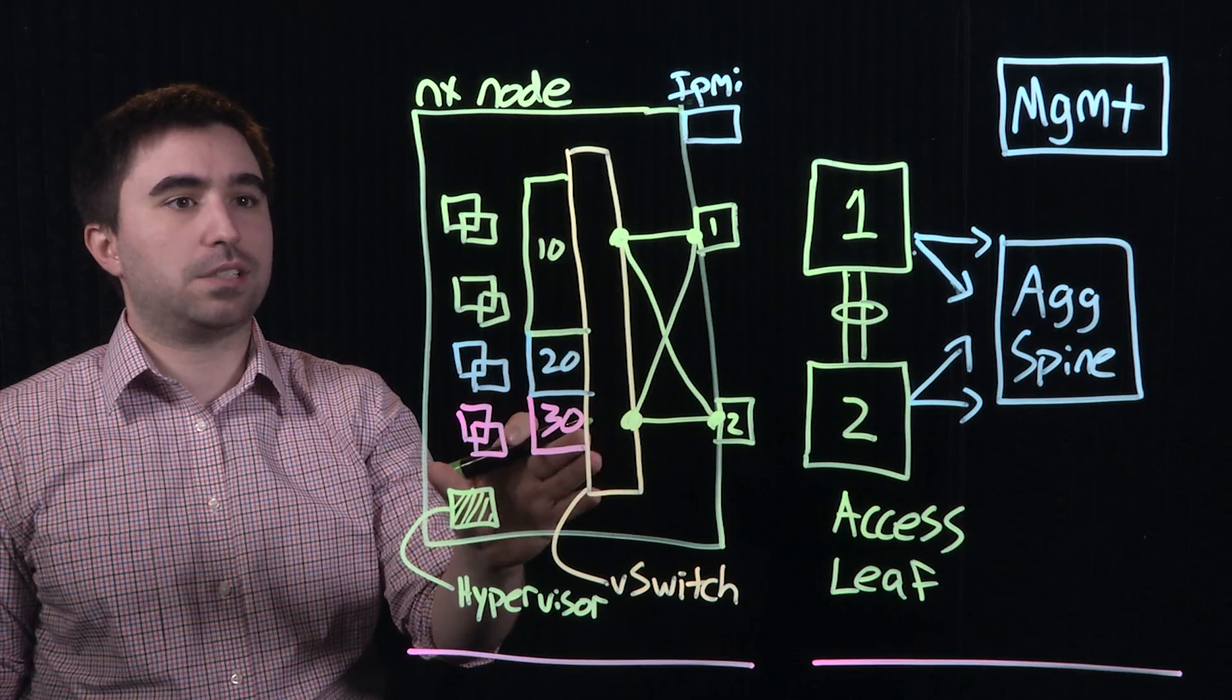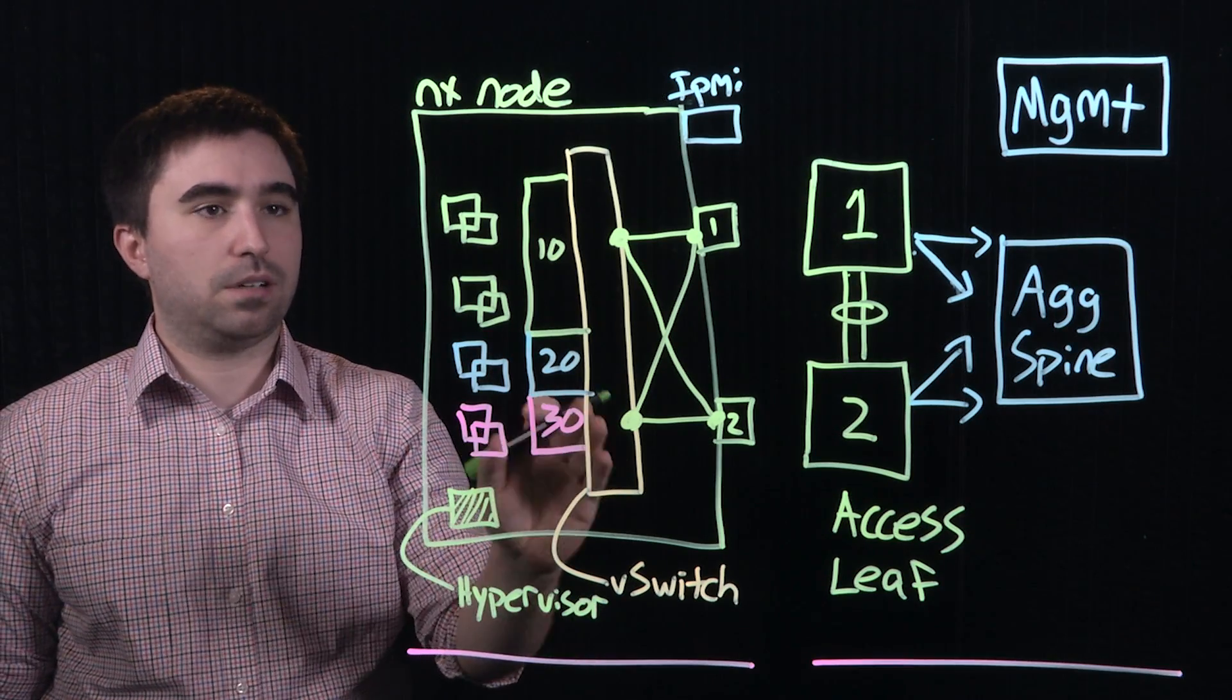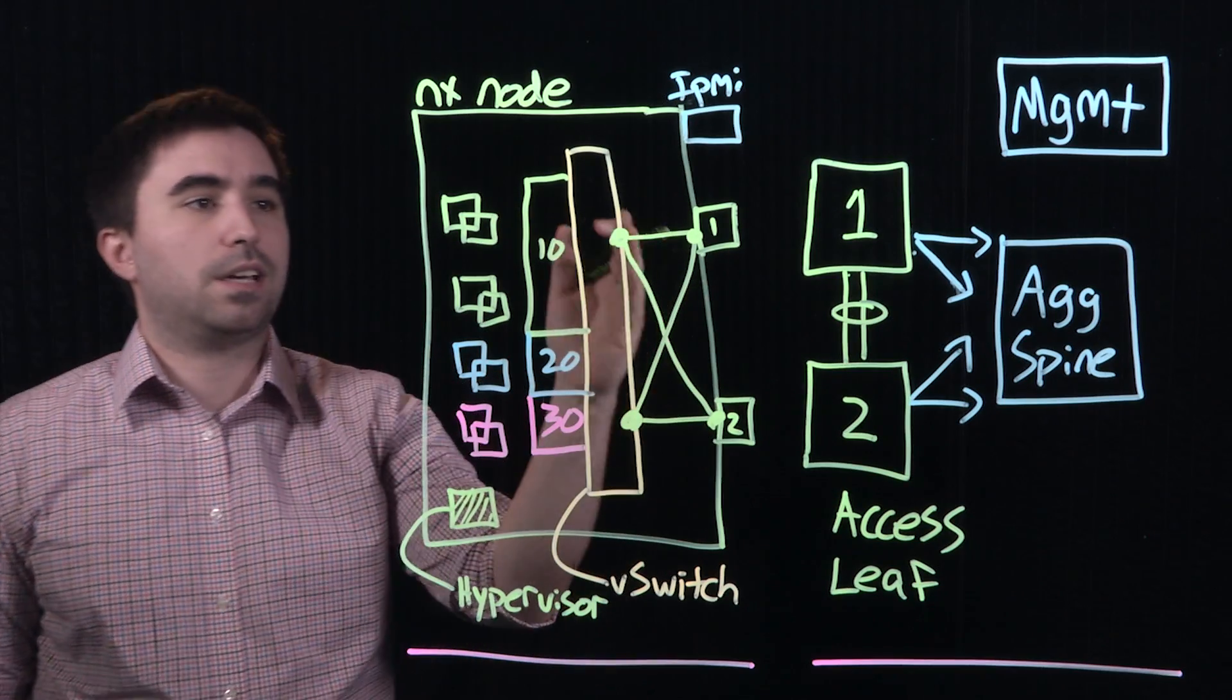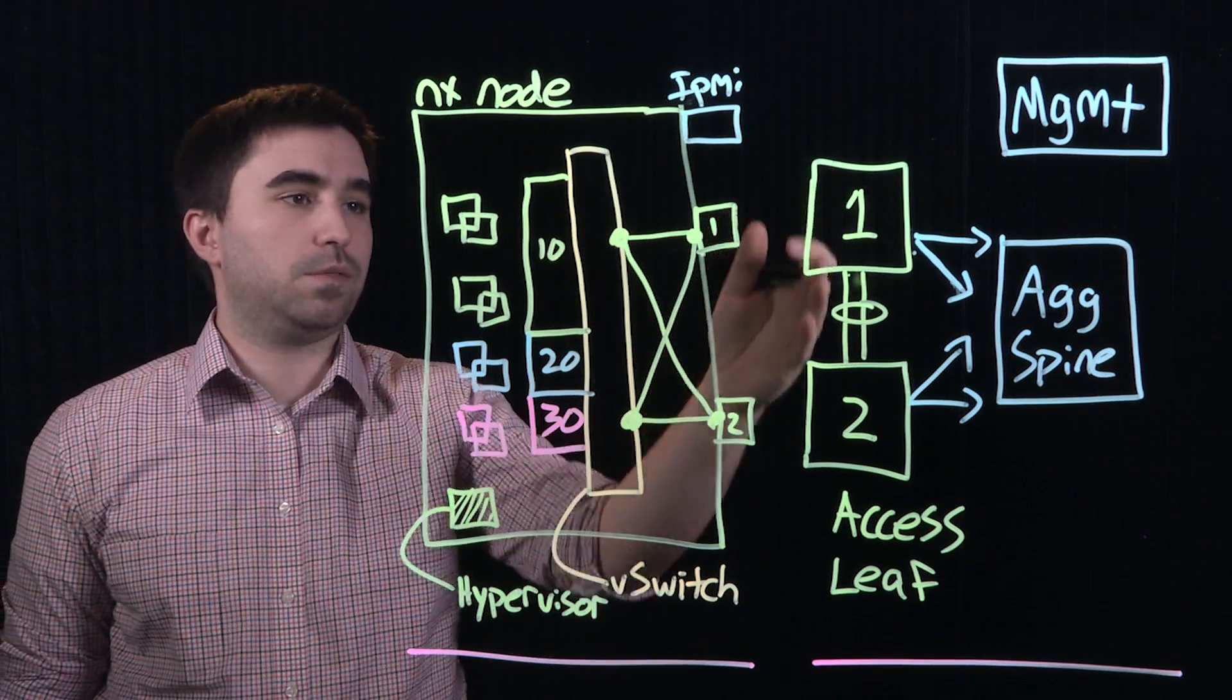We've got a diagram here of a Nutanix host running a hypervisor, a vSwitch, several virtual machines, and several virtual networks. We also have two physical adapters and two physical switches.